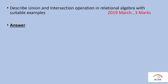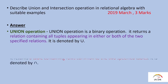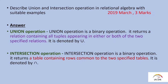Describe union and intersection operations in relational algebra. Union is a binary operation that combines two tables into a single table, eliminating duplicates. In the example, we have two classroom tables and combine them using union to get a single result table.